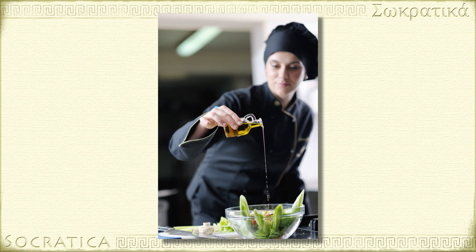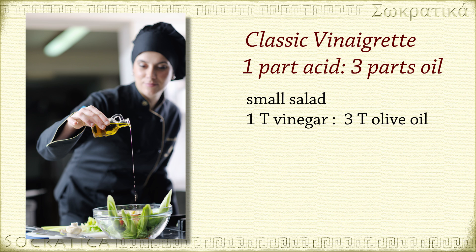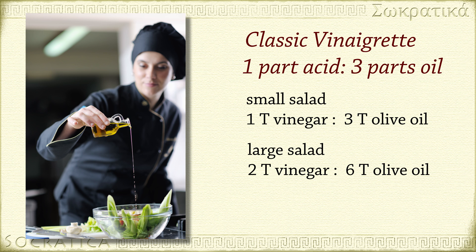This is sort of like when you learn to make salad dressing. A classic vinaigrette is one part acid to three parts oil. If you're making a salad for two people, you use one tablespoon of vinegar and three tablespoons of olive oil. If you're making a salad for four people, scale up: two tablespoons of vinegar and six tablespoons of olive oil. The ratio is the same — one to three.